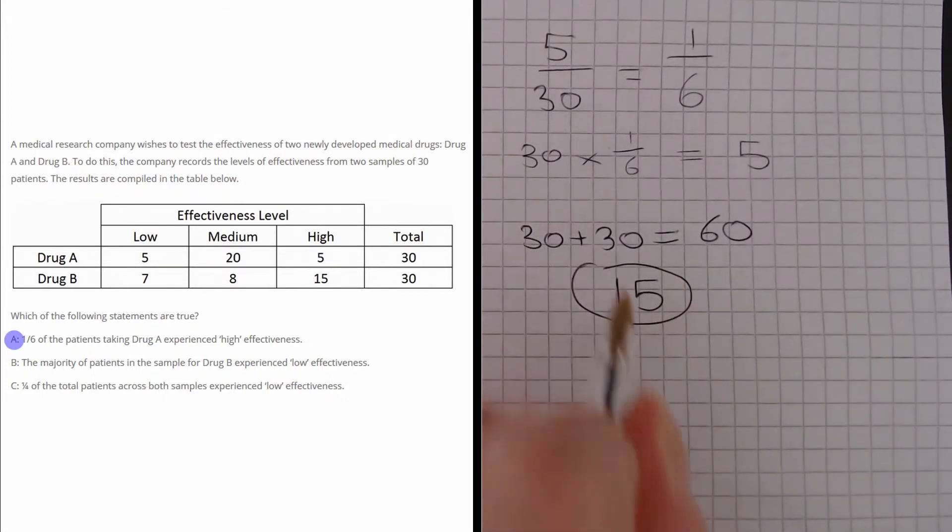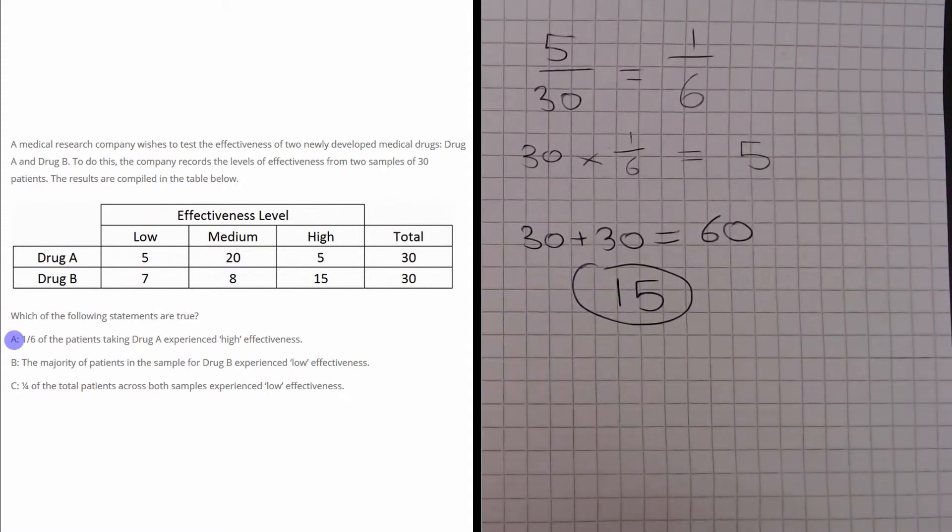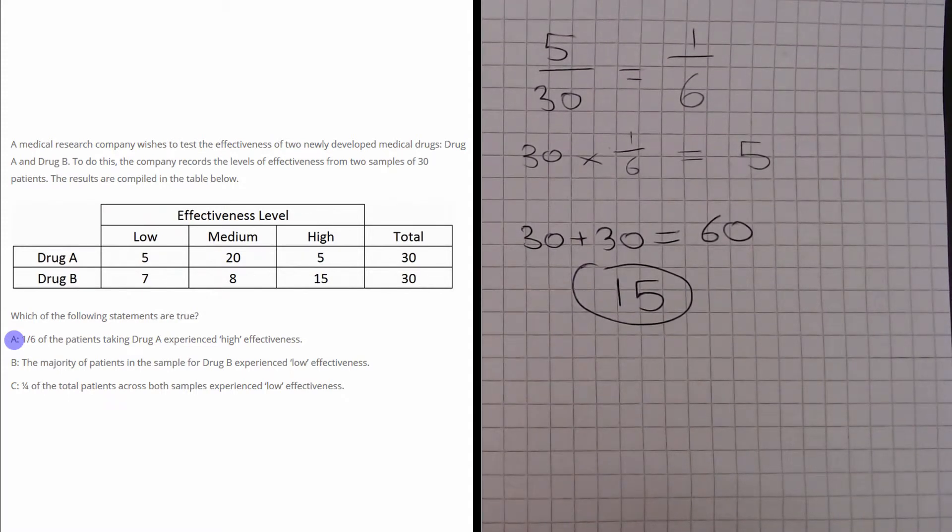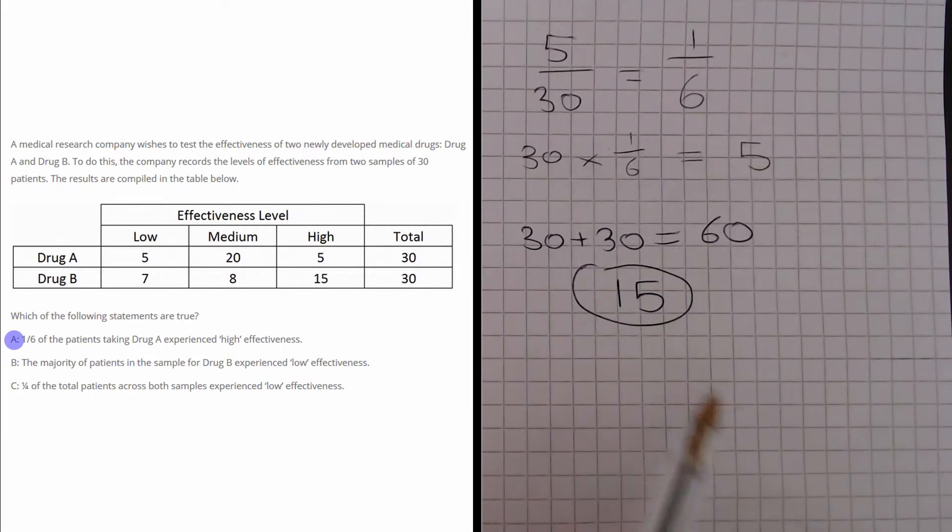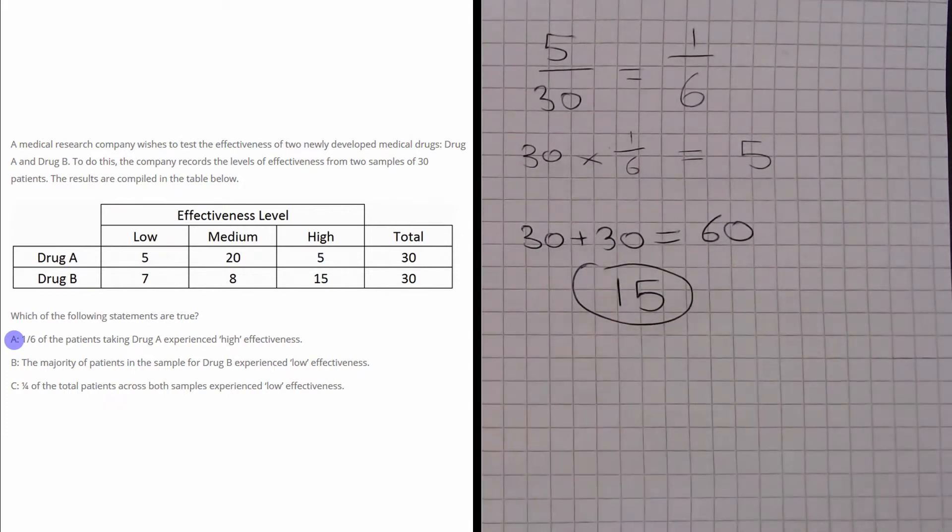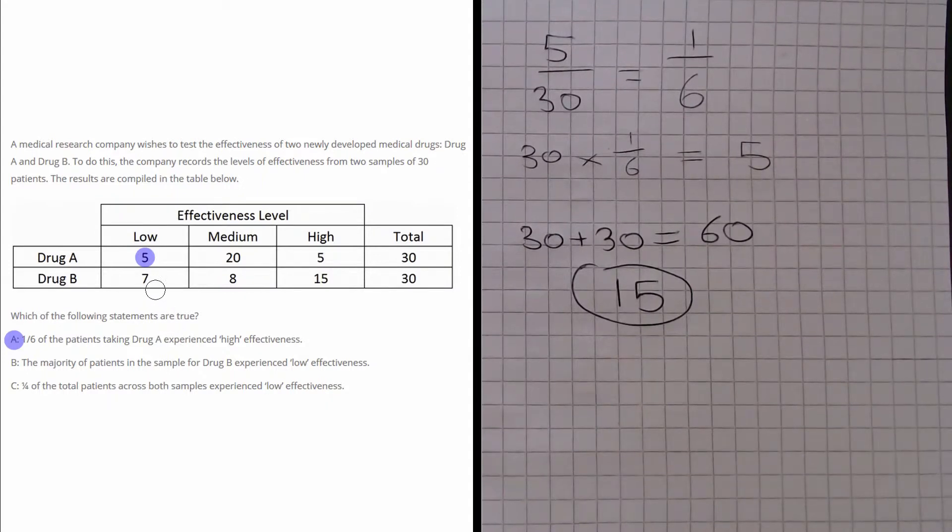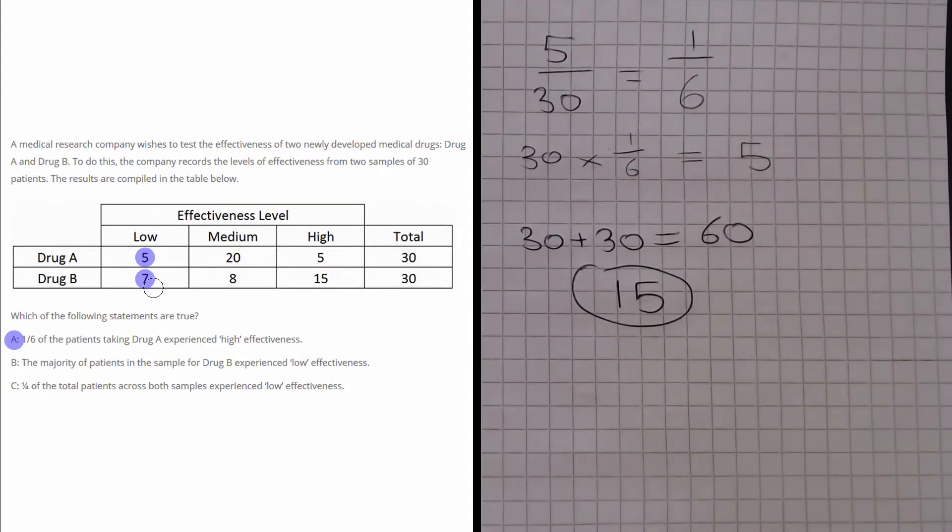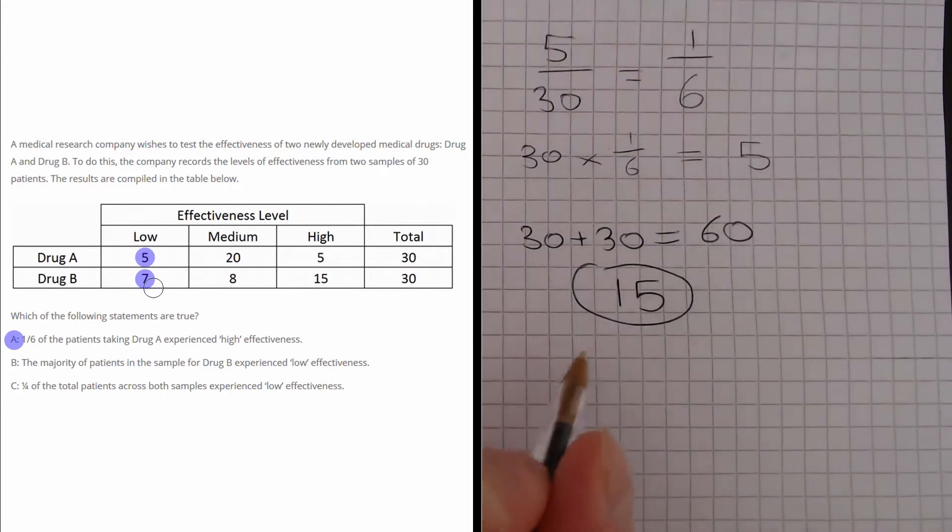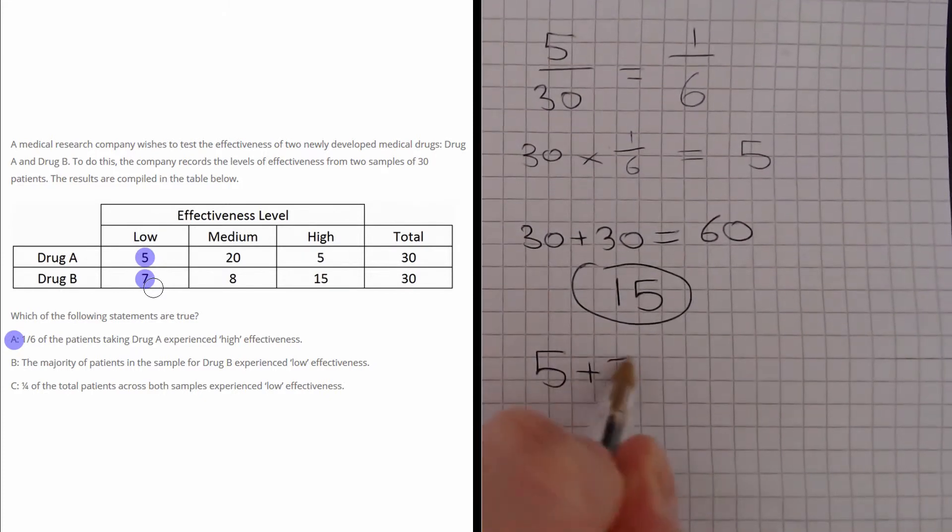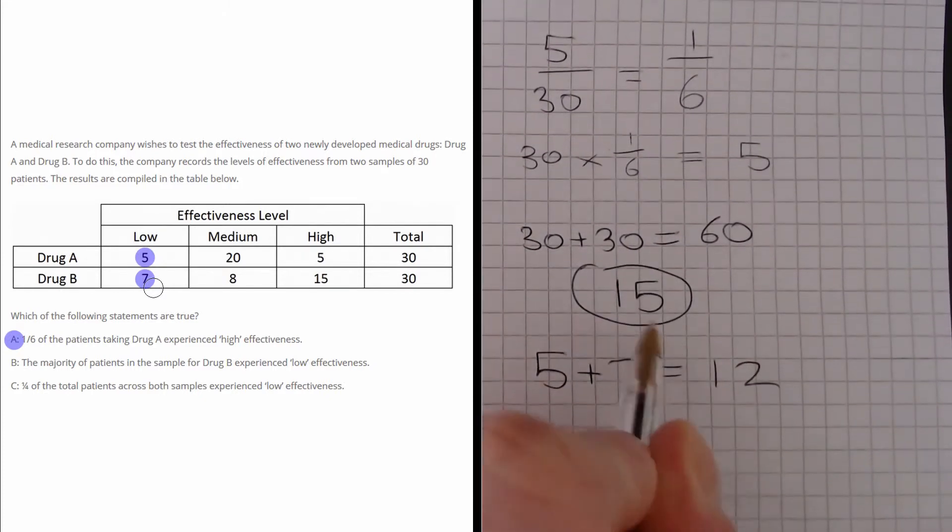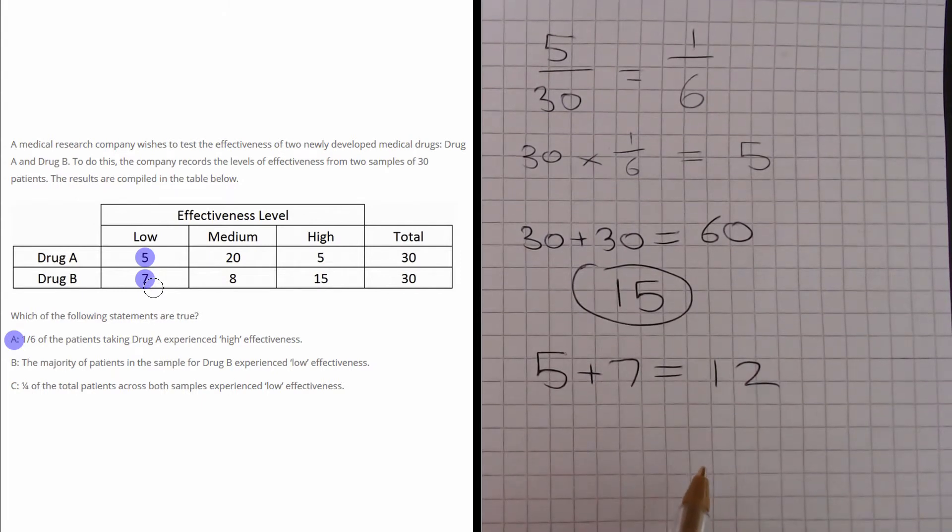So if a quarter of the total patients across both samples experienced low effectiveness, we would expect that 15 people experienced low effectiveness. But we can see that five people for drug A and seven people for drug B experienced low effectiveness. Five plus seven is 12, which does not equal 15, so we know that C is false.